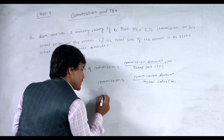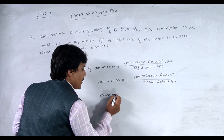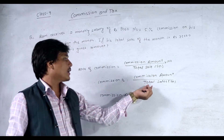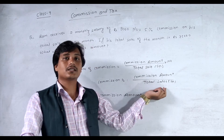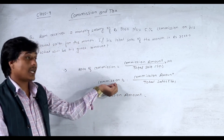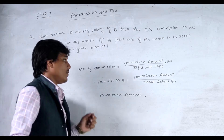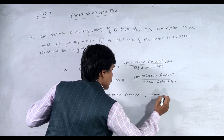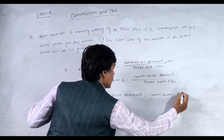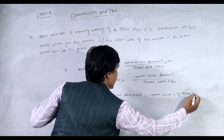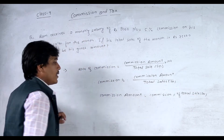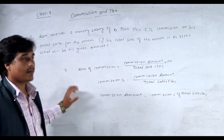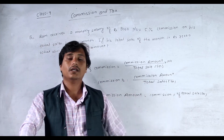You can directly calculate the commission amount. By cross-multiplying, total sales moves to the left-hand side in multiply form. So commission amount equals commission percentage of total sales. That means a certain percentage of total sales gives us the commission amount.